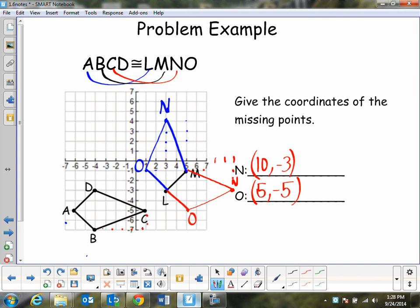So N would be at 3, 4. And O would be at 1, negative 1. I don't believe there are any more possible solutions so you can actually stop there.